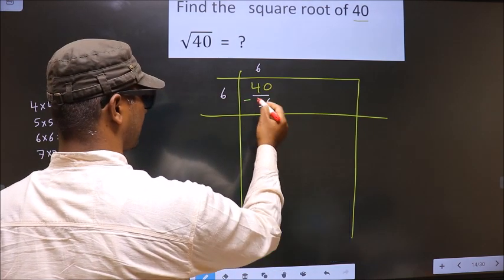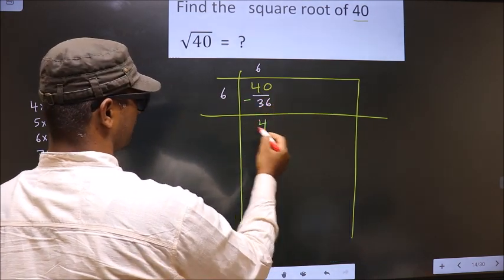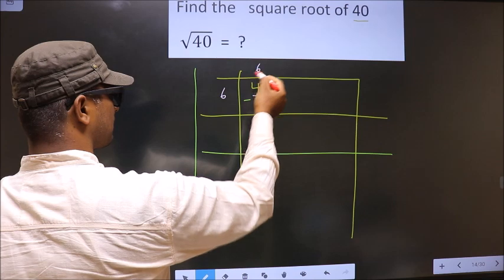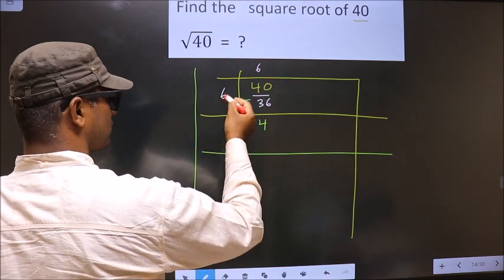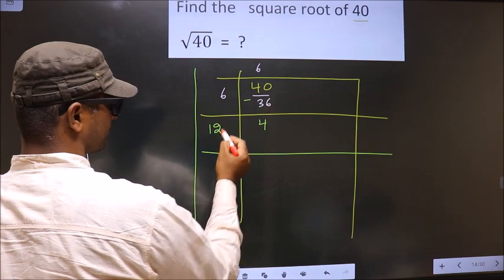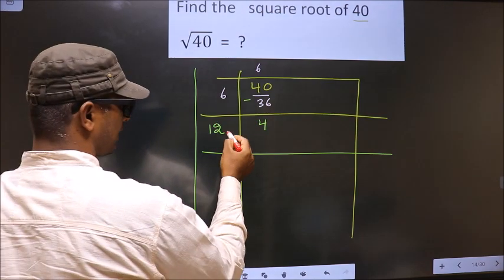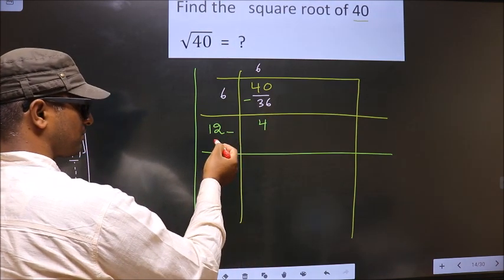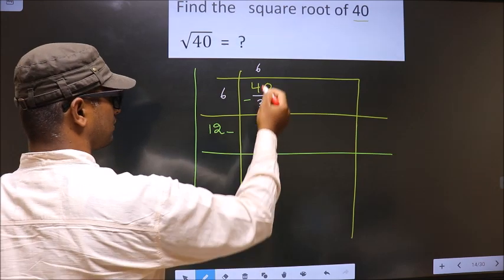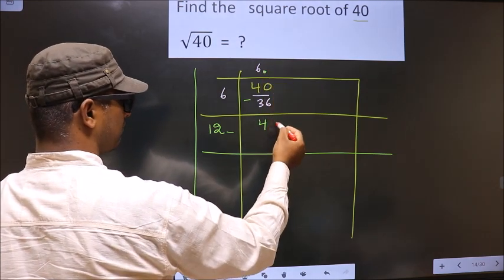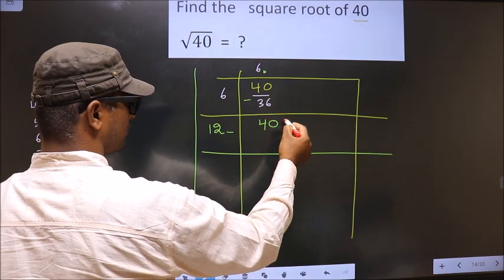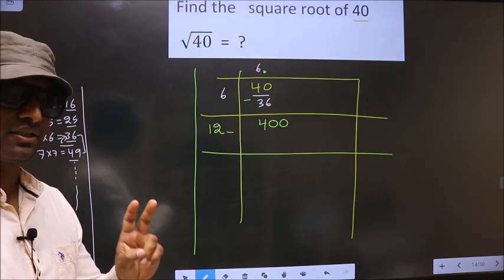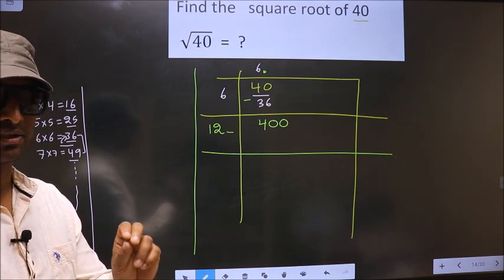Now subtract: 40 minus 36 is 4. Add the two divisor digits: 6 plus 6 is 12. Now I need to write the next digit. Since the remainder is smaller than the divisor, we take a decimal and bring down two zeros — while finding the square root, we should always take two zeros, not one. Remember that.